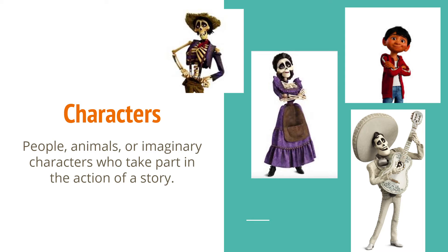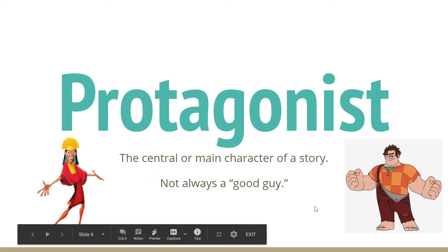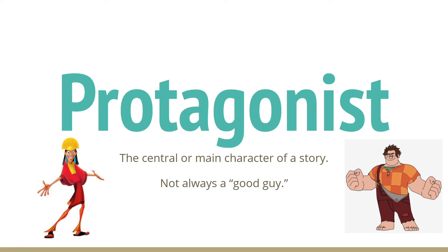Next is characters. You probably already know this word, but to explain: characters are the people, animals, or imaginary characters who take part in the action of a story. In Coco, some of the characters include Hector, Miguel, de la Cruz, and Mama Imelda. There are a couple of different types of characters I'd like you to know about. The first is the protagonist — the central or main character of a story.